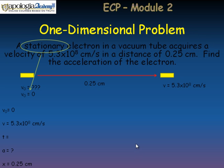Making a list of everything that we know, we know the initial velocity is 0. We know the final velocity is 5.3 times 10 to the 8th centimeters per second. And we know the displacement is 0.25 centimeters. We're looking for the acceleration, but we don't know the time.